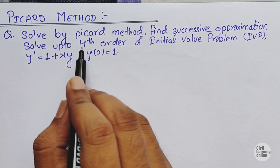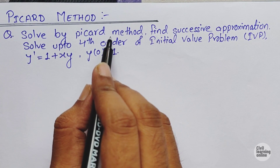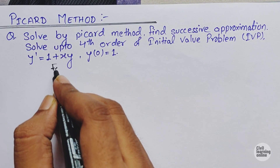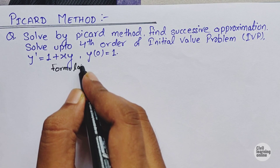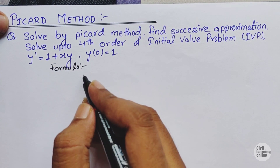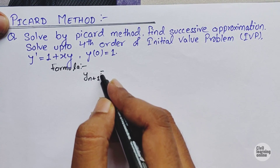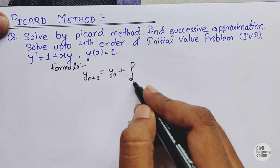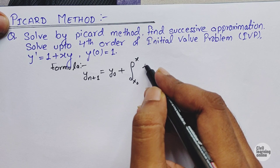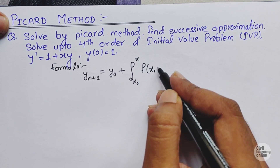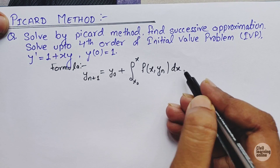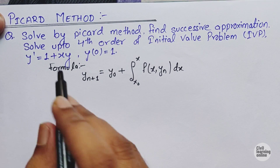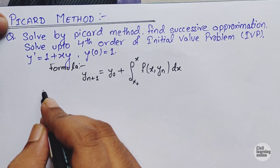First of all I would like to take you through the formula used for solving any numerical problem based upon Picard's method. The formula is given as: y(n+1) equals y-naught plus integration from x-naught to x of f(x, y) dx. This is the formula for solving any numerical based upon Picard's method.